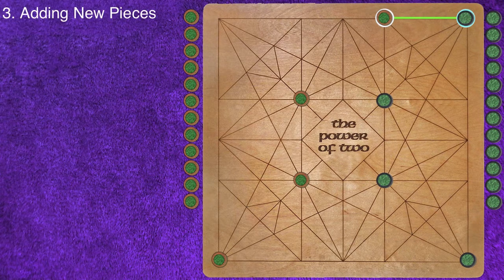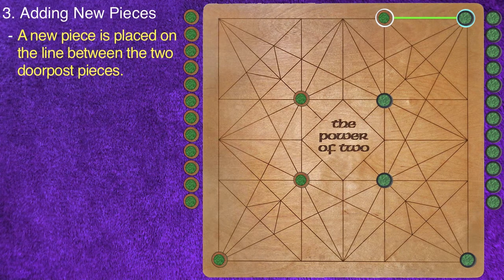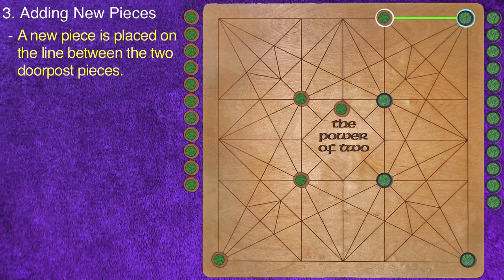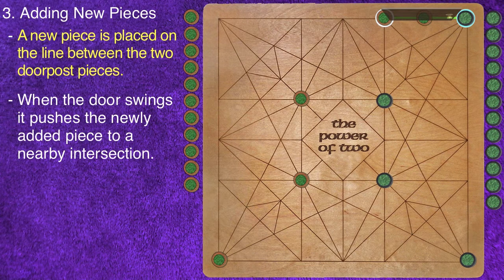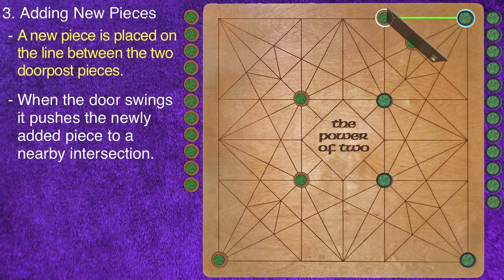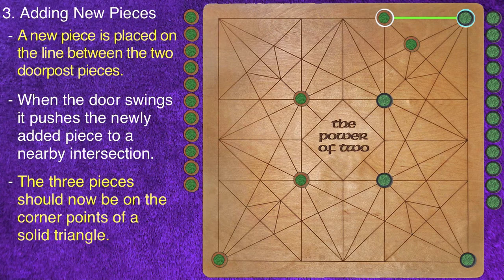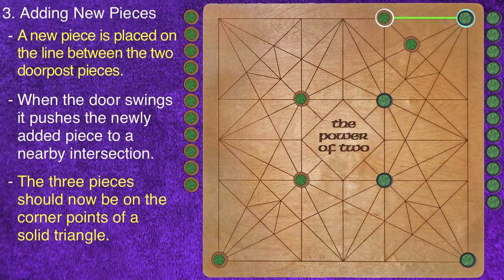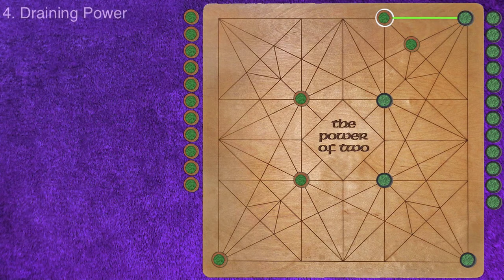Step 3: Adding new pieces to the board. To begin, the player places a new piece on the line between the two doorposts. When the door swings, it pushes the newly added piece to a nearby intersection. When the new piece is on a valid location, it and the two doorposts pieces will be on the corner points of a solid triangle.